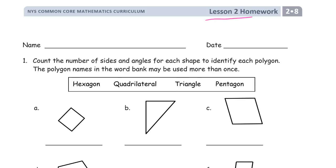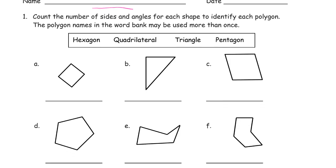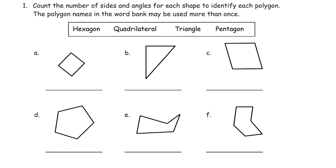Welcome to the homework for lesson 2. This is module 8 of second grade. Name on here first, please. Count the number of sides and angles for each shape to identify each polygon. The polygon names in the word bank may be used more than once.